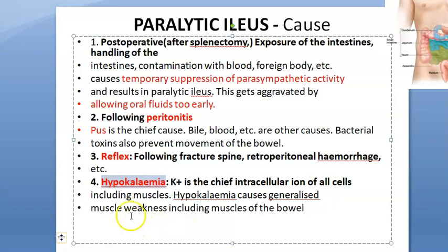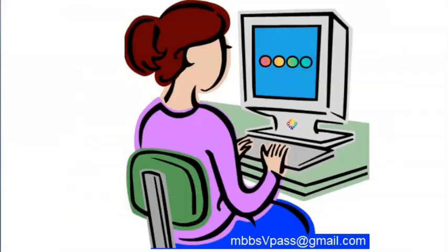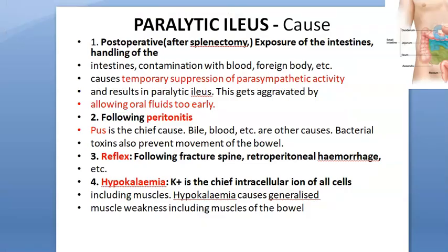Hypokalemia — low potassium — is a very important cause. When potassium is deficient, muscles will not work, including the muscles of the ileum. Hypokalemia causes generalized muscle weakness. To summarize the causes: low potassium, post-operative state, peritonitis, hemorrhage, and reflex ileus.